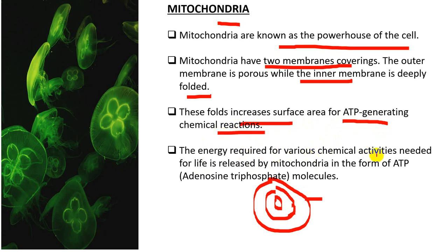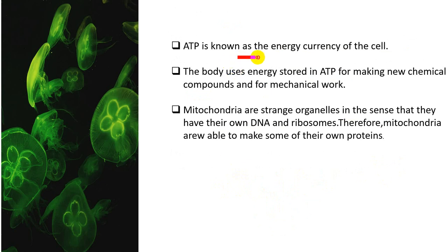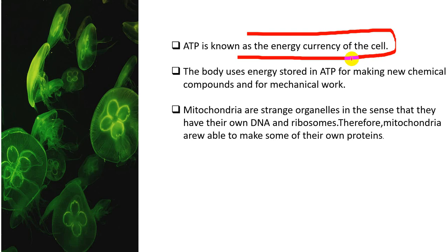The energy required for various chemical activities needed for life is released by mitochondria in the form of ATP — adenosine triphosphate. ATP is known as the energy currency of the cell. The body uses energy stored in ATP for making new chemical compounds and for mechanical work.